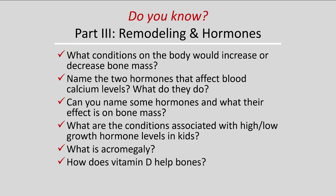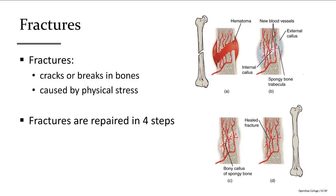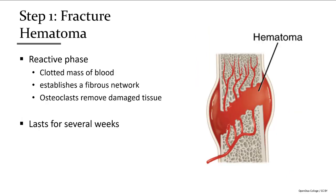You should know what conditions would increase or decrease bone mass, the two main hormones that affect blood calcium levels — calcitonin and parathyroid hormone — which one raises blood calcium and which decreases it, other hormones and their effects on bone mass, conditions associated with high or low growth hormone while the epiphyseal plate is open, what acromegaly is, and what vitamin D does to help bones. Finally, let's go over the steps to repair a broken bone. A fracture is a crack or break in the bone caused by physical stress. There are four main steps in this repair process.